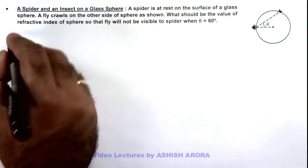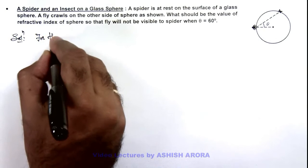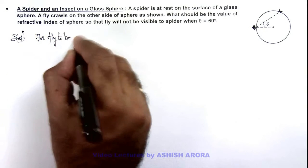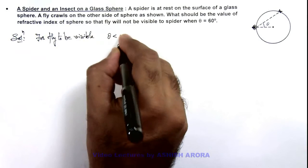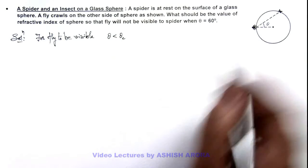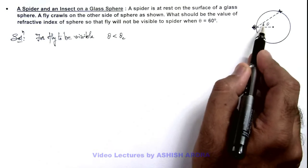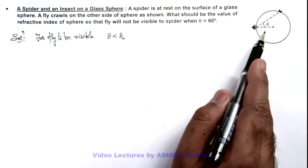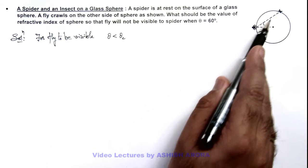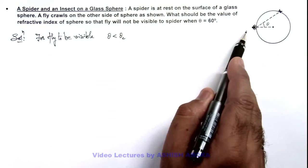Here we can directly write that for the fly to be visible, the value of theta must be less than the critical angle. Because when a light ray incidents on the surface at critical angle or more, the light will not come out of the glass. So in this situation, this light ray coming from the fly will be visible to the spider only when the light comes out in air.